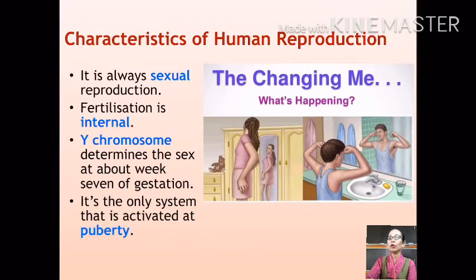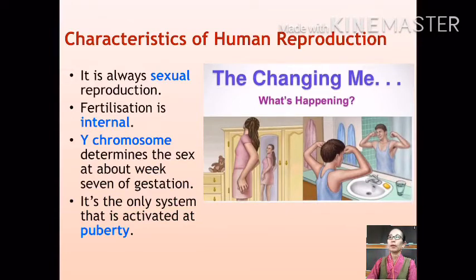Hence, it is the Y chromosome which controls the sex of an individual. The ability of an individual to reproduce can only be attained after passing the juvenile phase. In fact, the reproductive system is the only system which gets activated at puberty.